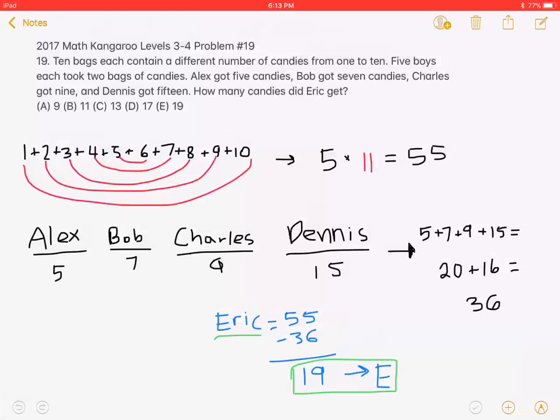This is the 2017 Math Kangaroo, Levels 3-4, Problem Number 19. Ten bags each contain a different number of candies, from 1 to 10. Five boys each took two bags of candies. Alex got five candies, Bob got seven candies, Charles got nine, and Dennis got 15. How many candies did Eric get?